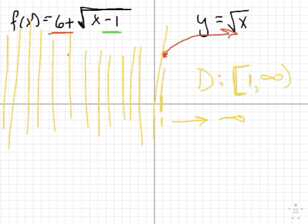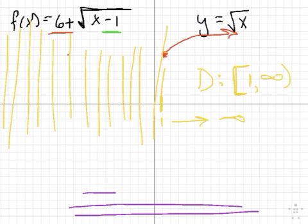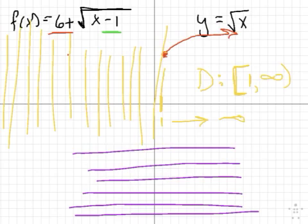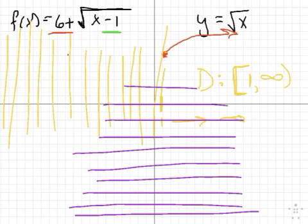Alright, let's do the range. Let's do the range in purple. What's the range going to be? I'm going to take a horizontal line now from negative infinity. Does it hit the graph down here? Scanning, scanning. Where does it start to hit the graph? Here. Right here. At what? At what point? On the Y. At 6.